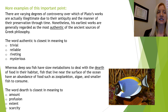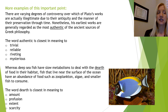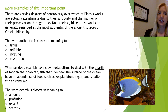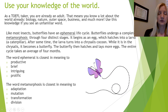In the first example, Plato's works are actually illegitimate — meaning they're not real or authentic. But then we have the word 'nonetheless,' and his earliest works are generally regarded as the most authentic. Authentic must mean real or genuine, and the closest word is the second answer, reliable. For the next one, whereas deep sea fish have slow metabolisms to deal with the dearth of food in their habitat, fish near the surface have an abundance. So dearth must mean the opposite of abundance — the fourth answer, scarcity, is correct.